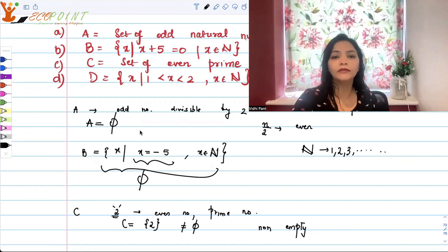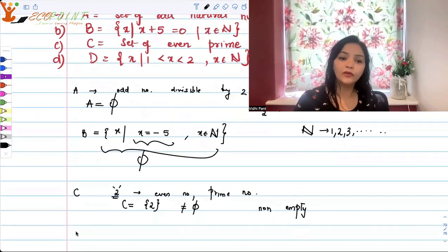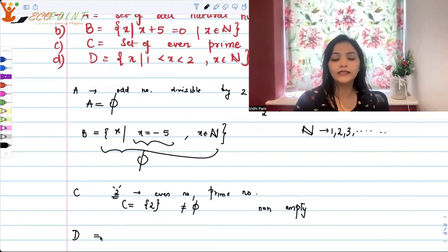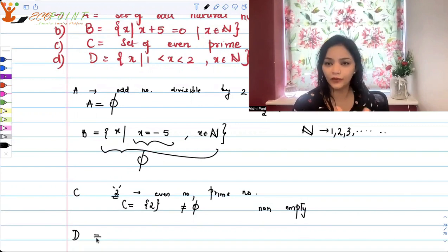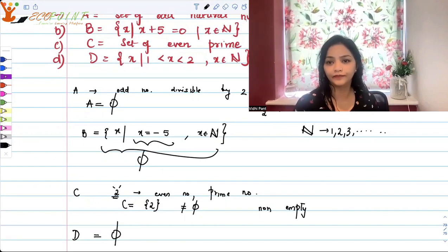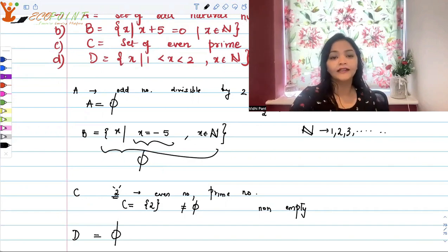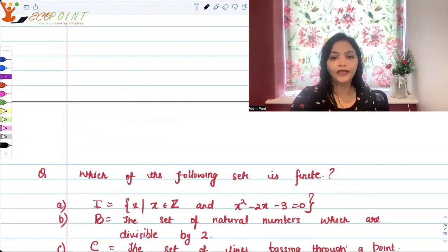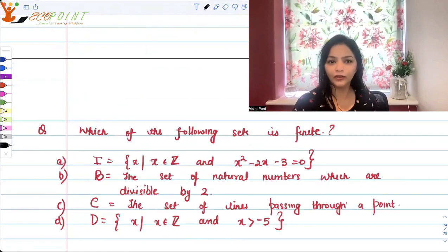And if you observe D, D is talking about all the natural numbers that you can find between 1 and 2. Can you find any natural number between 1 and 2 excluding 1 and 2? No. So that was a quick brush up on different type of numbers and looking at the notation of sets.